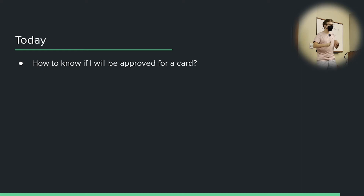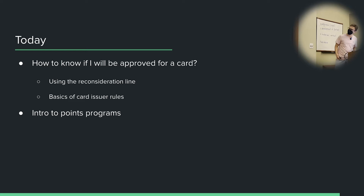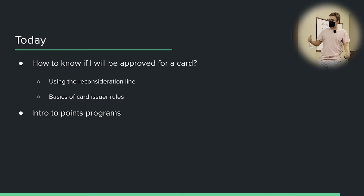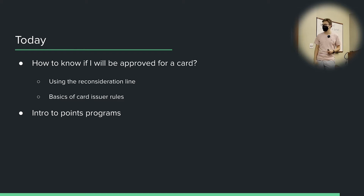Presenter remote does not work again. So, we're going to first talk about how to know if you will be approved for a card or not. You do not want to get denied for a card that you applied for because you receive a hard inquiry either way. So every hard inquiry you receive ideally should be an approval. We're going to talk about using the reconsideration line — not every denial for a credit card is an actual denial. And then we're going to talk about the basics of card issuer rules, which are extremely important because if you're in violation of these rules, you cannot get a card from that issuer regardless of your credit score.